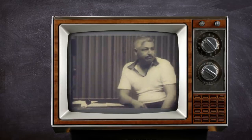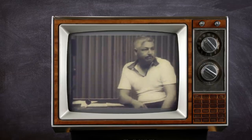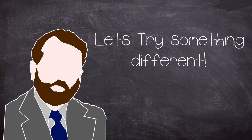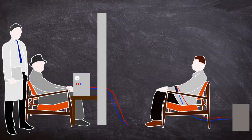Milgram would repeat the experiment in several variations to see if any of the conditions changed would yield different results. Even when Milgram conducted the experiment in an unregistered office far away from Yale, the results were fairly similar.